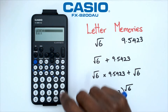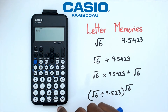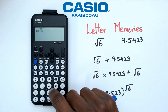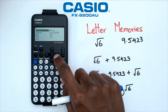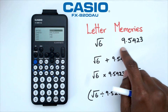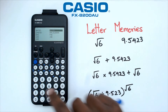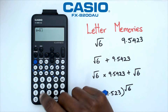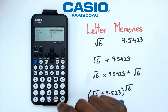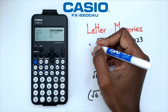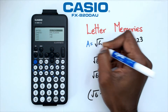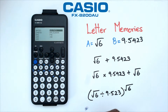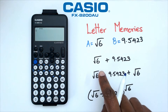I'm going to click EXE, then click Edit, and write A is equal to square root of six. The next one is B — I'm going to replace that with nine point five four two three. I can just type it in straight away: nine point five four two three. So I've now stored A equals square root of six and B equals nine point five four two three.